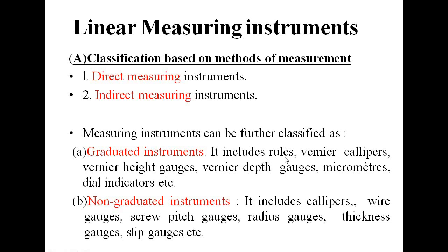Graduated instruments include ruler, vernier caliper, vernier height gauges, vernier depth gauges, micrometers, dial indicators, etc. Non-graduated instruments include calipers, wire gauges, screw pitch gauges, radius gauges, thickness gauges, slip gauges, etc. Non-graduated instruments only tell whether to accept or reject a part.